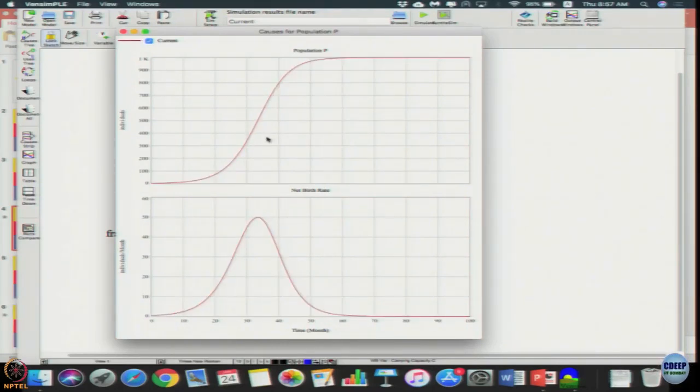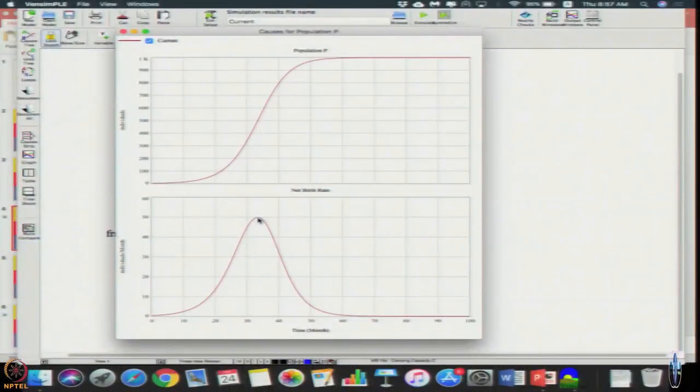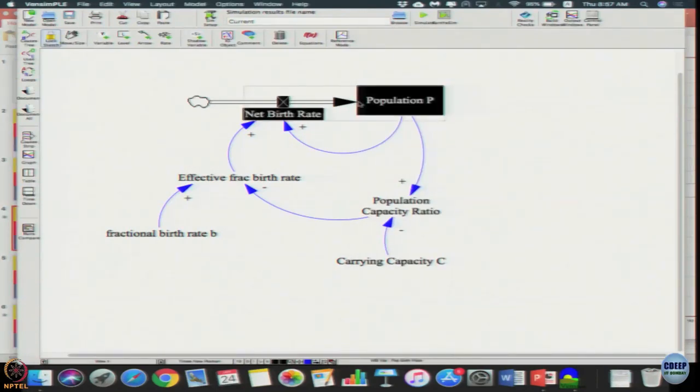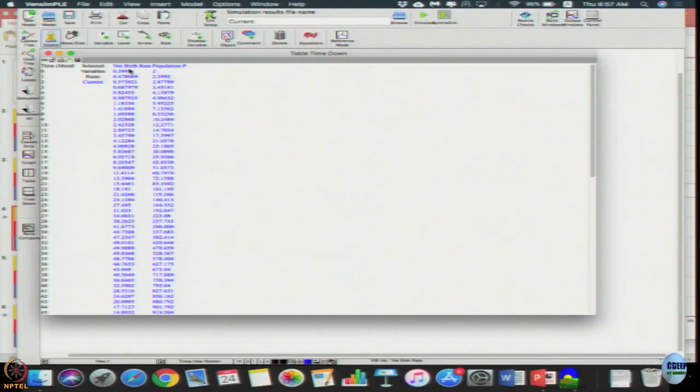The inflection point - how do you find it? Do you need to differentiate anything? Just using the simulation result, how do you find it? It will be the peak of the rate, the time at which this peak occurred. To find the exact time we can click and shift-click, select both, click the table, time down, observe the net birth rate - it keeps increasing.